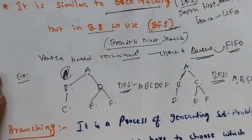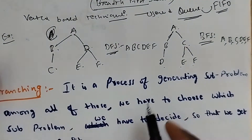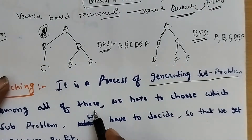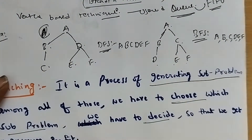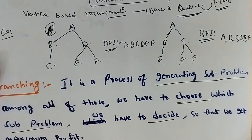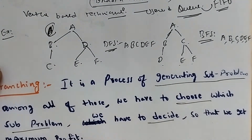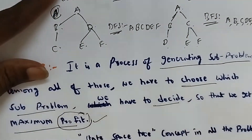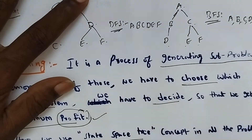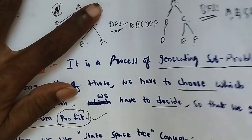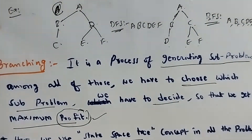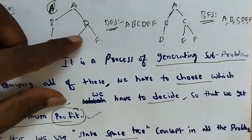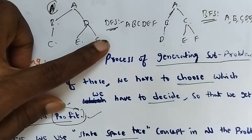This is about branch and bound. Branching is the process of generating sub-problems. Among all of these, we have to choose which sub-problem we can decide so that we get maximum profit. We use a state-space tree diagram in this concept. Among all nodes, we extend the cheapest path.